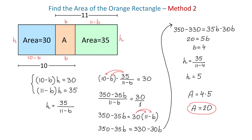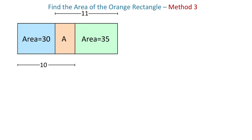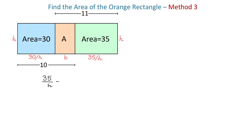Now let's see method 3. Let the height of each rectangle be H and the base of the orange rectangle be B. In the green rectangle, if the area is 35 and the height is H, the base is 35/H. Similarly, in the blue rectangle the base is 30/H. We can then write: 30/H + B = 10 and 35/H + B = 11.